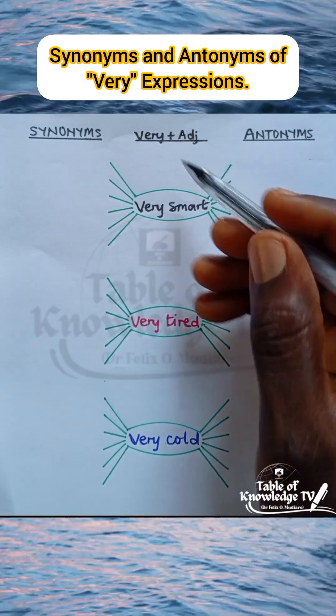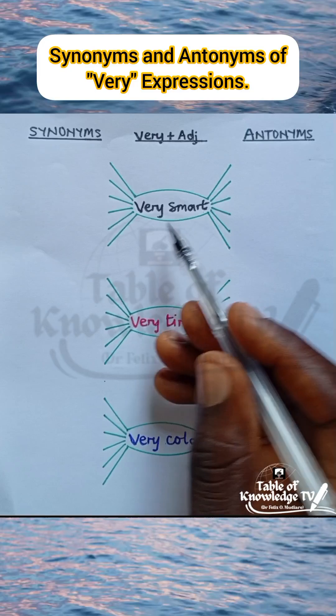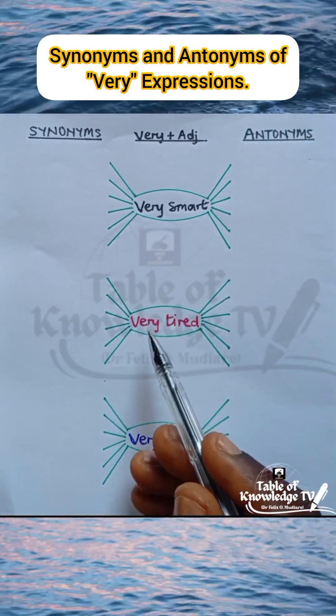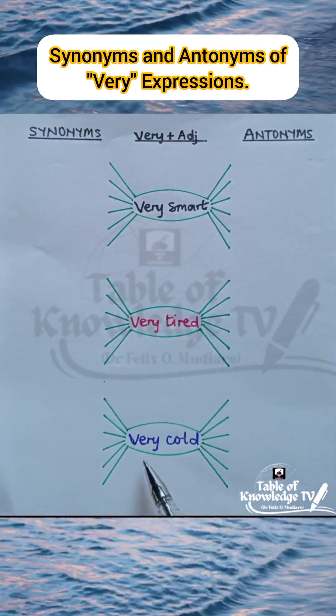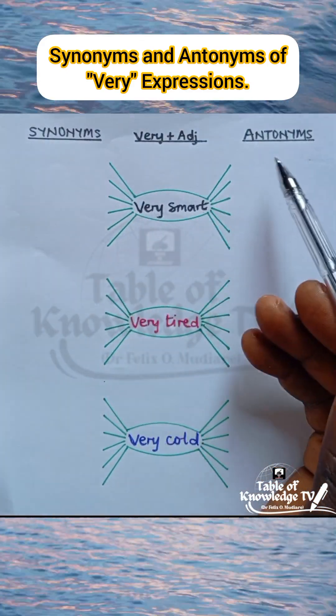Very plus adjective: very smart, very tired, very cold. We are going to look at their synonyms as well as their antonyms.